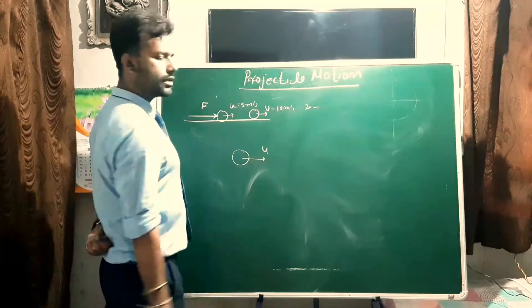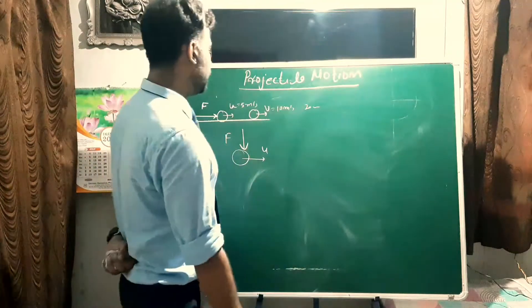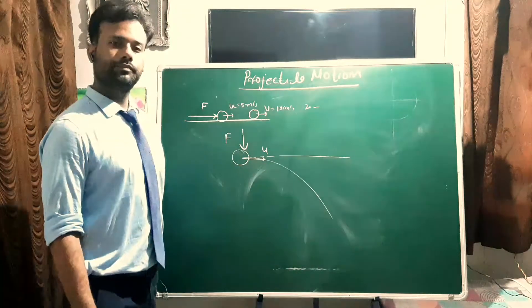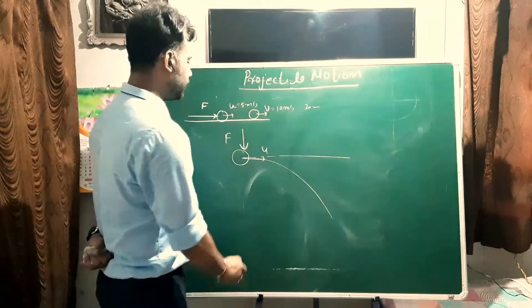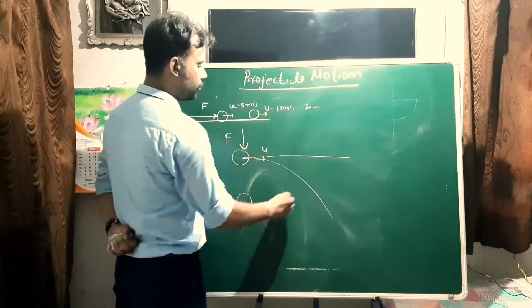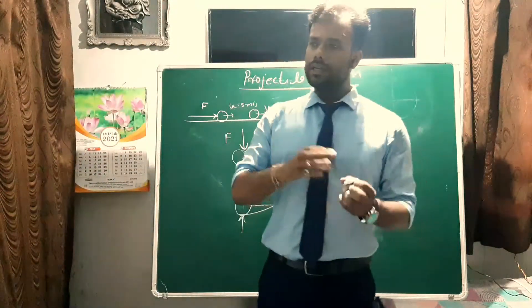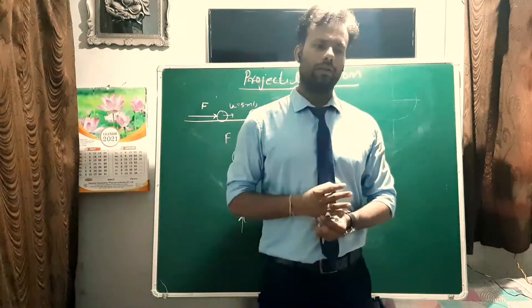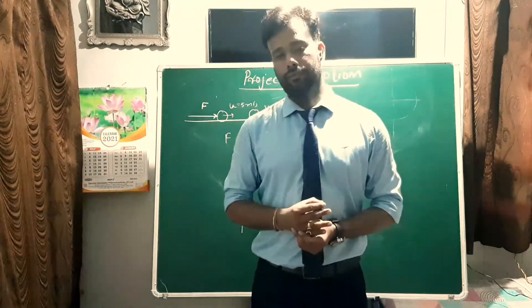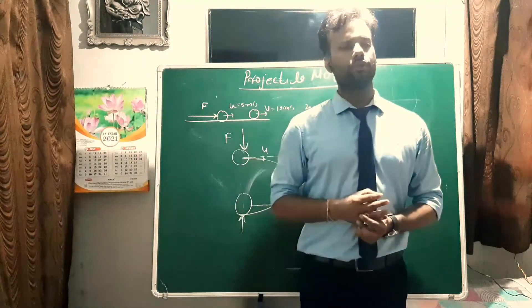But if a body is moving in one direction and I push it downward, it will deflect downward. If I push it upward, it deflects upward. That means if the acceleration acts at a different angle to the velocity, the body will change its direction. This is exactly what happens in projectile motion.